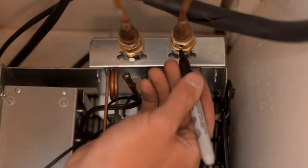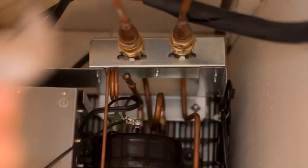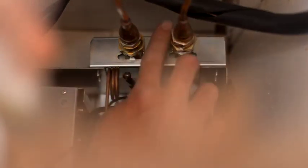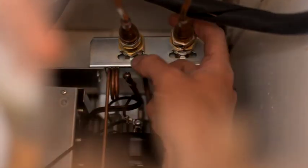Mark coupling with pen, then tighten additional one-sixth to one-quarter of a turn. Apply soap to couplings to ensure no leaks. Wipe soap off once verified.